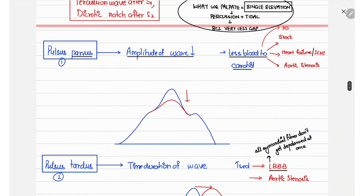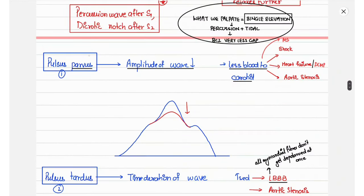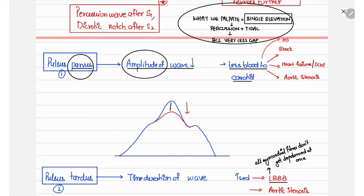The first pathological pulse character is pulsus parvus, in which the amplitude of the tidal wave decreases — the blue waveform shown is normal, and the other shows decreased amplitude. This occurs whenever there is decreased blood reaching the carotids, which happens when there is decreased blood volume within the left ventricular cavity, such as in shock or mitral stenosis.